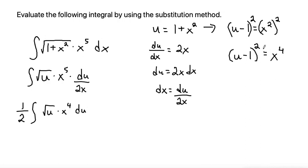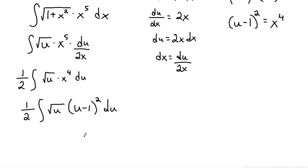So now I can substitute my x to the fourth in the problem. So I can make that 1 half integral of the square root of u times u minus 1 squared du. So now I have effectively gotten rid of all of my x in my problem and I only have u's left. So now we want to see, can we use an integral formula to take the integral of this?